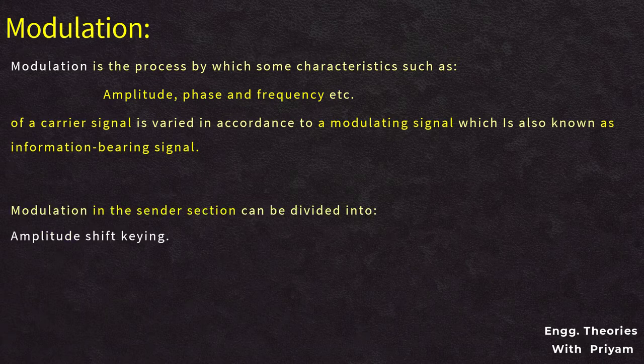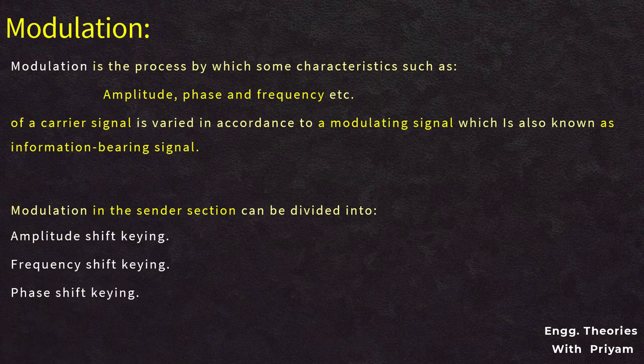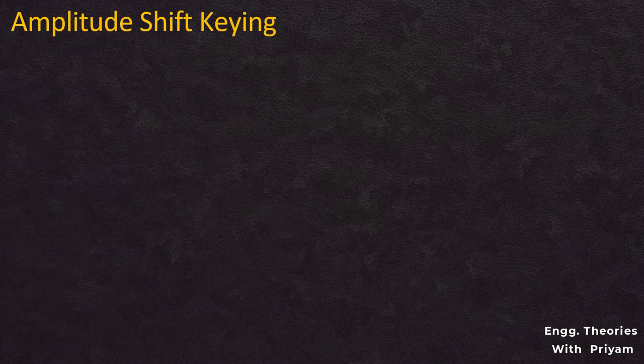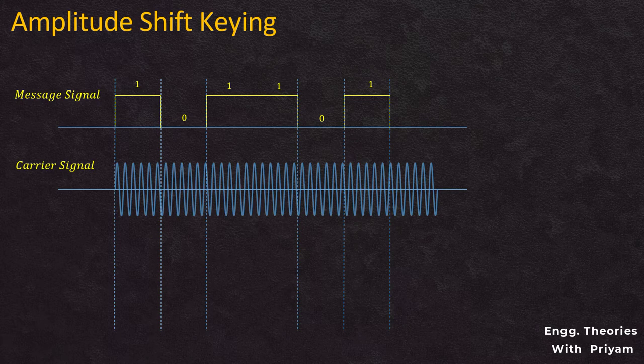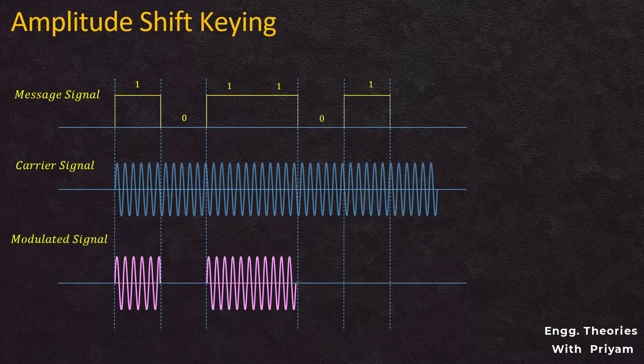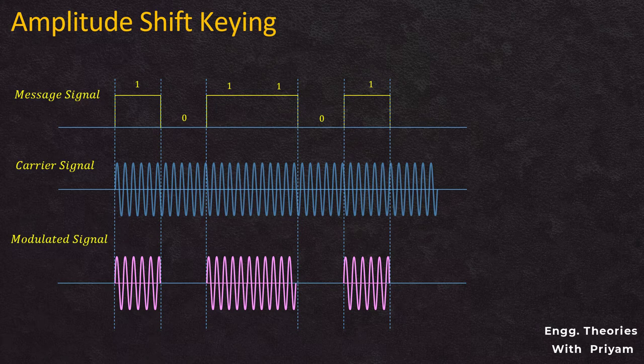Modulation in the digital domain can be divided into Amplitude Shift Keying (ASK), Frequency Shift Keying (FSK), and Phase Shift Keying (PSK). In ASK, the message signal is a sequence of data bits represented as a digital signal, and the amplitude of the high-frequency carrier signal is varied according to the message signal. When the message signal equals 1, the modulated signal has the amplitude of the carrier; when it equals 0, the amplitude is zero.